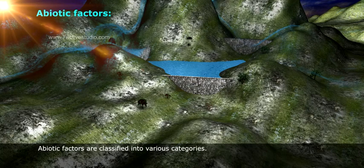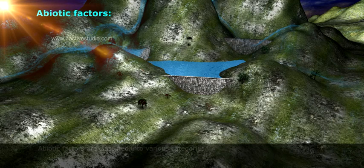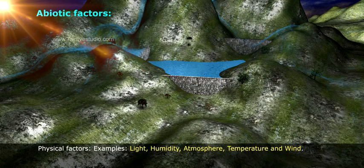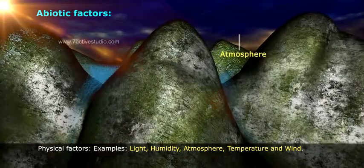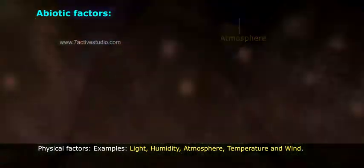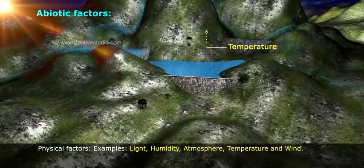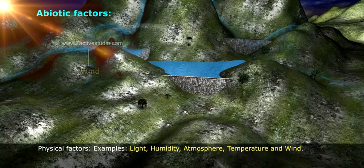Abiotic factors are classified into various categories. Physical factors include examples such as light, humidity, atmosphere, temperature, and wind.